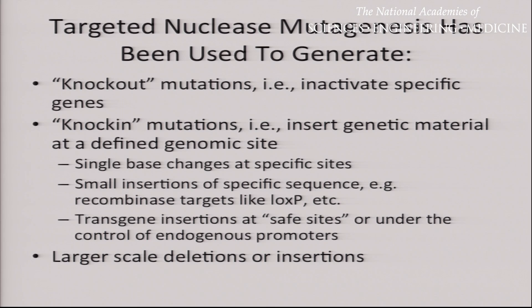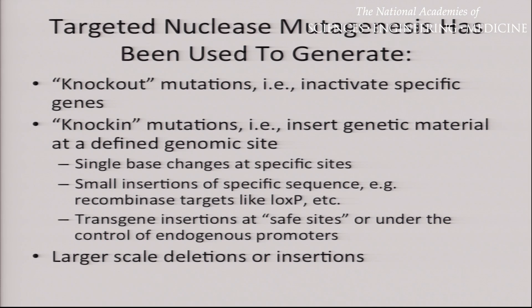The targeted mutagenesis has already been used to generate knockout mutations — inactivating specific genes; knock-in mutations — inserting genetic material at a defined site, either single base changes or larger pieces of DNA; inserting transgenes using endogenous promoters and endogenous control systems for genetic expression rather than the blunt force of random insertion transgenesis; and even making large-scale deletions or insertions, knocking out large regions of the genome.